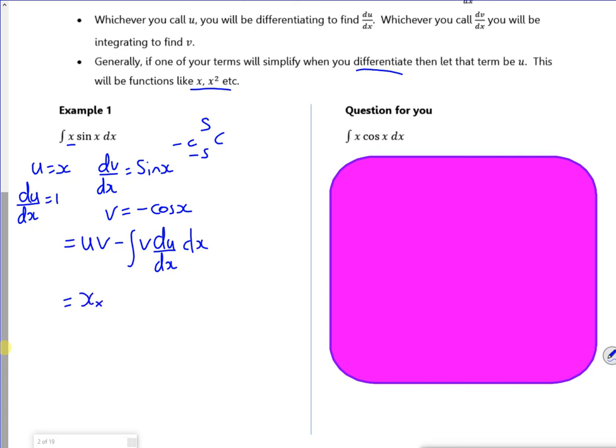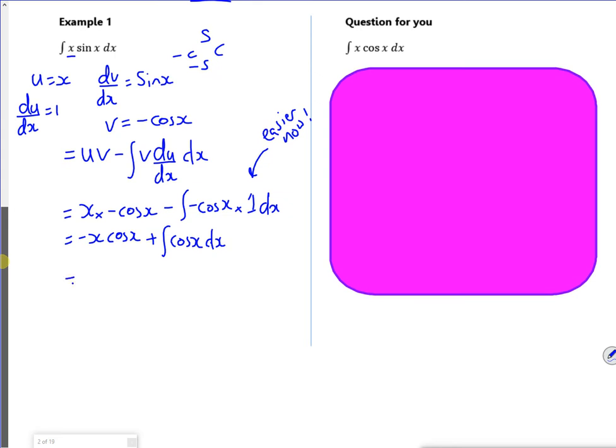So u is x and v is minus cos x. So that's going to be minus x cos x. Then it's minus the integral of v, which is minus cos x, multiplied by du dx, which is 1. So can you see that it's easier? Because I've differentiated the x to make it into a 1. So if I tidy that up, it's like that. So now I need to integrate the second part of it. So it's minus x cos x. Cos integrates to sin, and then plus sin.